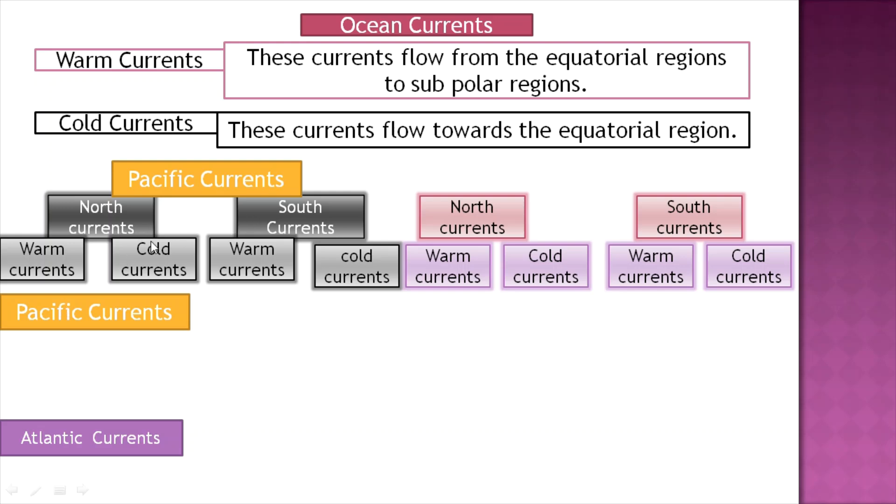We find warm currents and cold currents in both the Pacific and Atlantic oceans, with north currents and south currents in each.